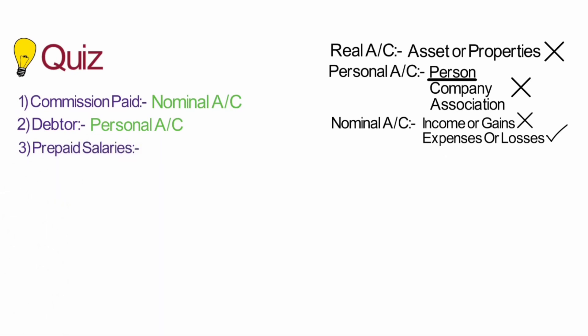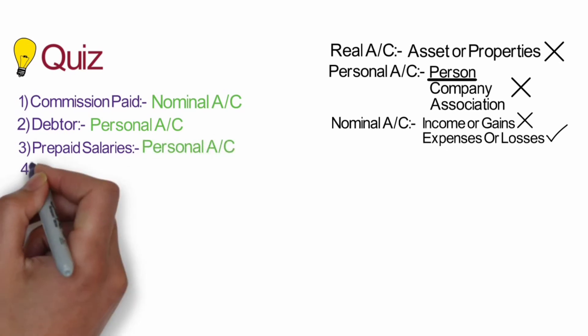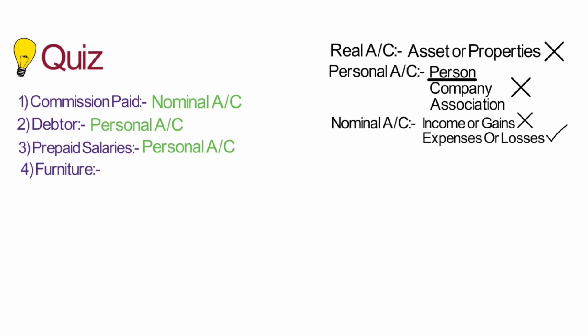Prepaid salary is an amount which we have already paid in advance to some person. Since it is related to a specific person, it falls in the category of personal account — prepaid salary is a personal account. Next, furniture is an asset of the business, and assets fall under the category of real account, so furniture is a real account.